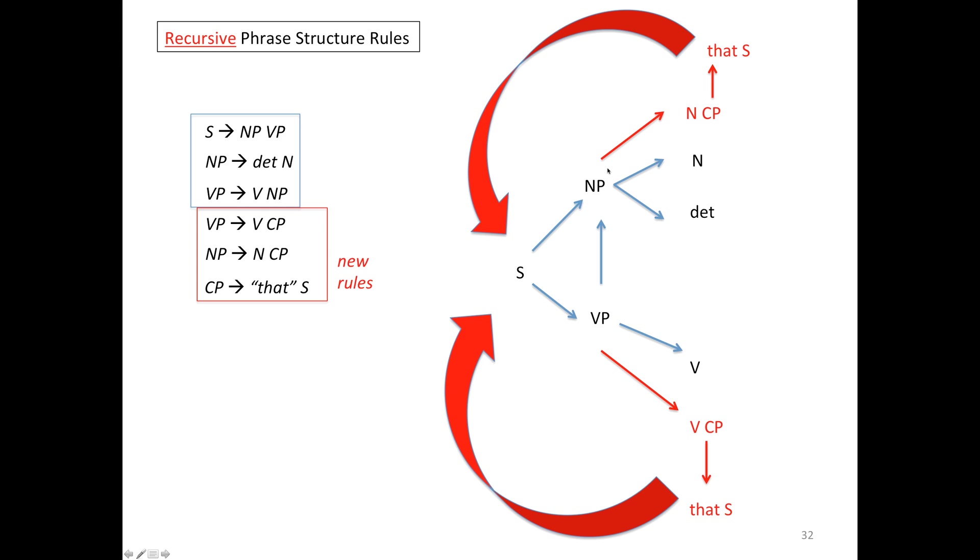What happens with these new rules that involve the complementizer phrases is you get a cycle going. So that noun phrase and verb phrase now go into noun complementizer or verb complementizer. And the complementizer phrase is that S. And that S takes us back to the starting node, S. And that's the sense in which a cycle is generated.